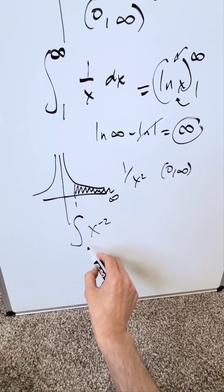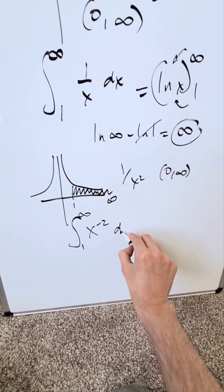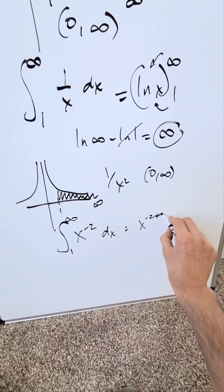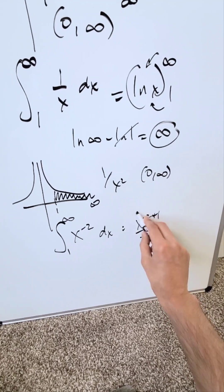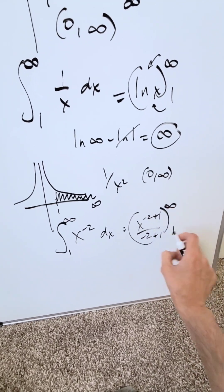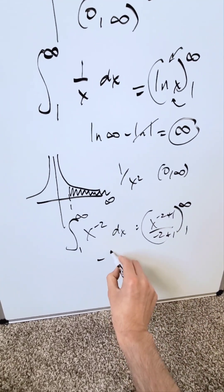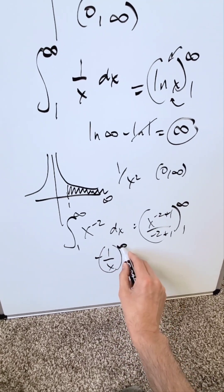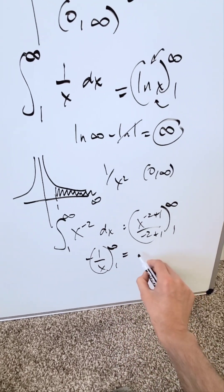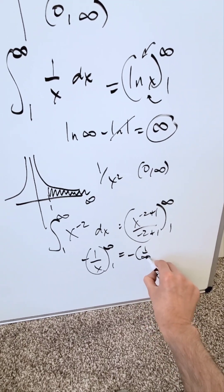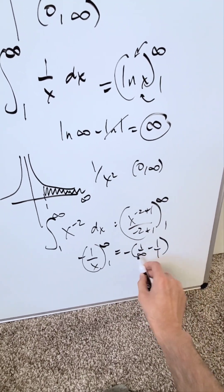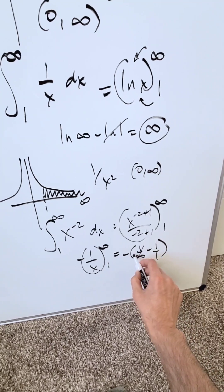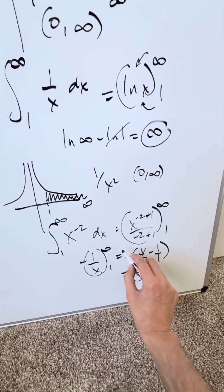Integrating x⁻² from 1 up to infinity, the antiderivative using the power rule is x to the minus 2 plus 1, divided by minus 2 plus 1 — evaluated from 1 to infinity. Simplifying, that gives minus 1/x. Putting in the upper limit infinity and lower limit 1: minus 1/infinity minus minus 1/1. Since 1/infinity tends to 0, you get minus(−1), which equals 1. This area is equal to 1.